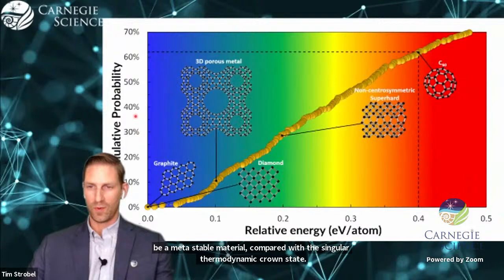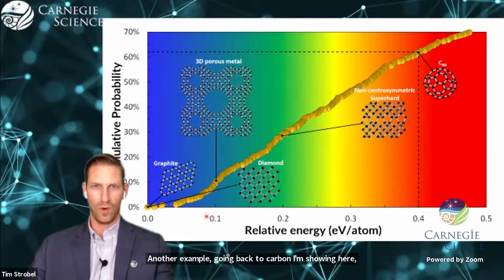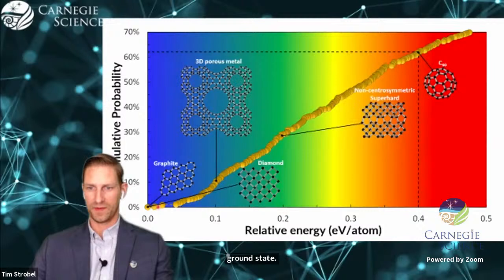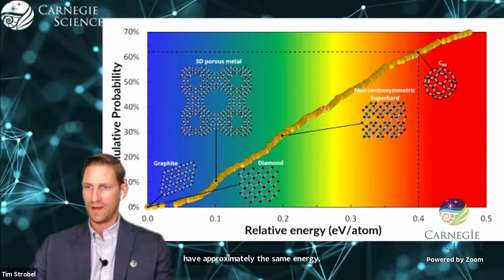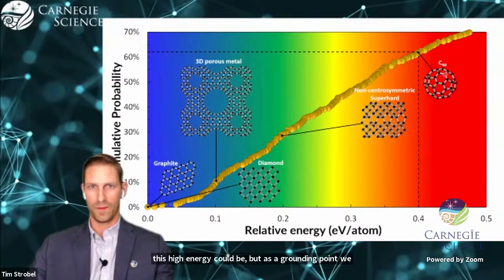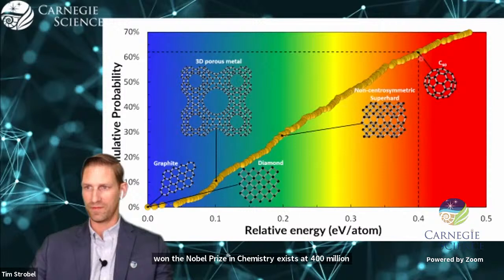Another example, going back to carbon, I'm showing here a histogram where the cumulative probability of known and hypothetical carbon allotropes is a function of formation energy relative to graphite. On this plot, you can see that graphite and diamond have approximately the same energy, but there are hundreds, if not thousands, of hypothetical carbon allotropes that could exist at only slightly higher energies.